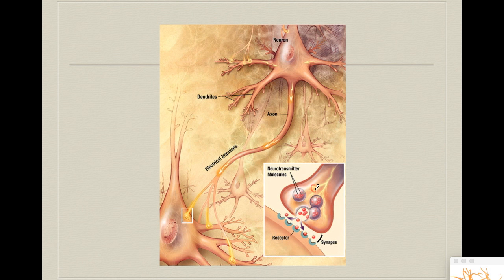Once we have synthesized glutamate, it will remain in our neuron for a while. Then a specific part of the neuron called the axon terminal will have something called a vesicle. This vesicle is basically like a lipid droplet with a special set of proteins that allow it to capture all of the free glutamate in the cytoplasmic space. All of the free glutamate gets trapped inside our vesicle and waits there.